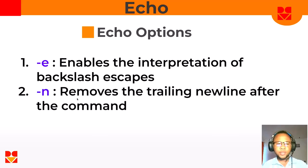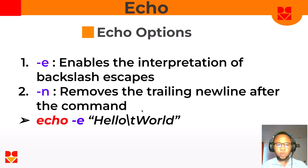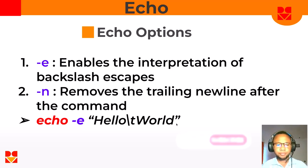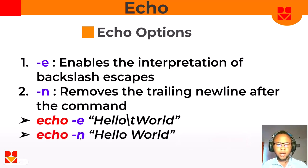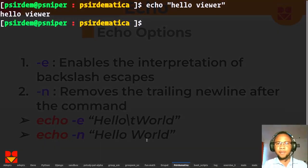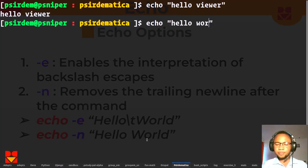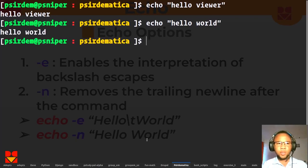We also have option -n, which removes the trailing newline from after the echo command. After executing the echo command, if you pass option -n it removes that newline. So you can say: echo -e "hello	 world" and you can also use echo -n. Let's look at it.